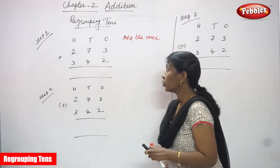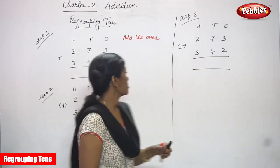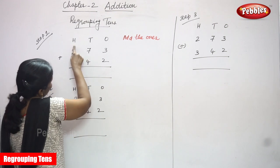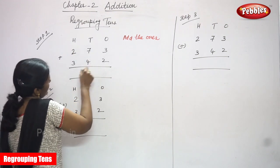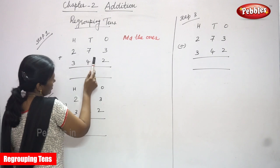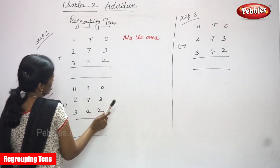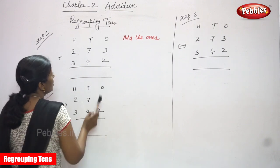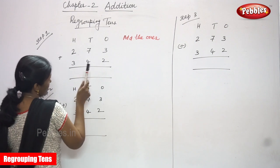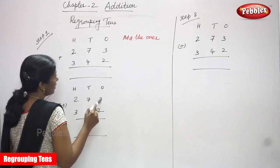Now we are going to see regrouping tens. Look at this sum — this is three-digit addition. The first number is 273 and the second is 342, also three digits. We are going to add these three-digit numbers using the regrouping tens method.